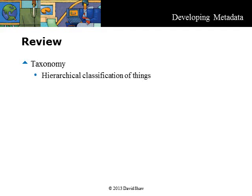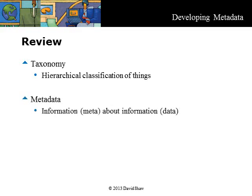In previous modules, we discovered the difference between taxonomy and metadata. Taxonomy is a hierarchical classification of things in which a content object can only be placed in one node. Metadata, in contrast, is a flat model of information associated with the content, sometimes externally and sometimes internally. A title, for example, is internal metadata, and a good content management system will extract this rather than requiring you to key it into a form. We also discussed how a metadata field can incorporate a taxonomy.